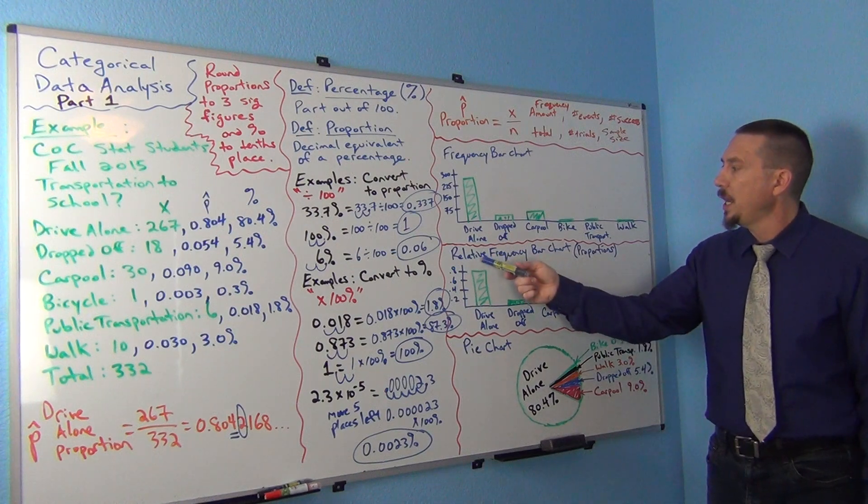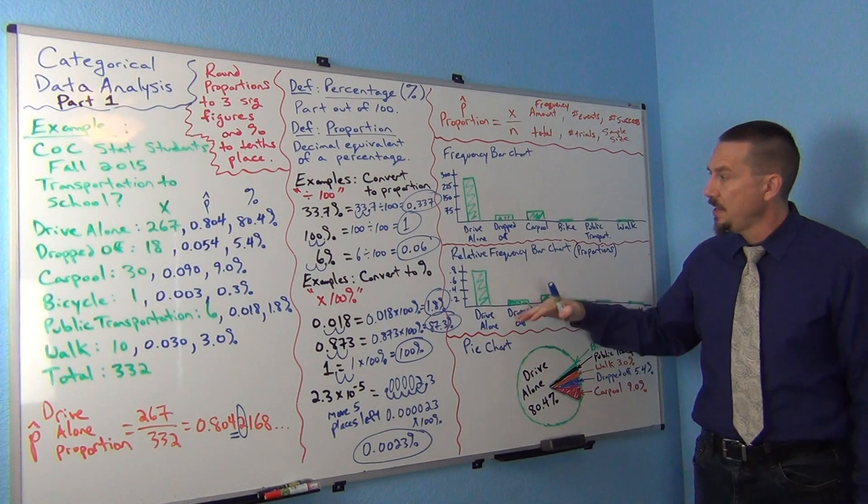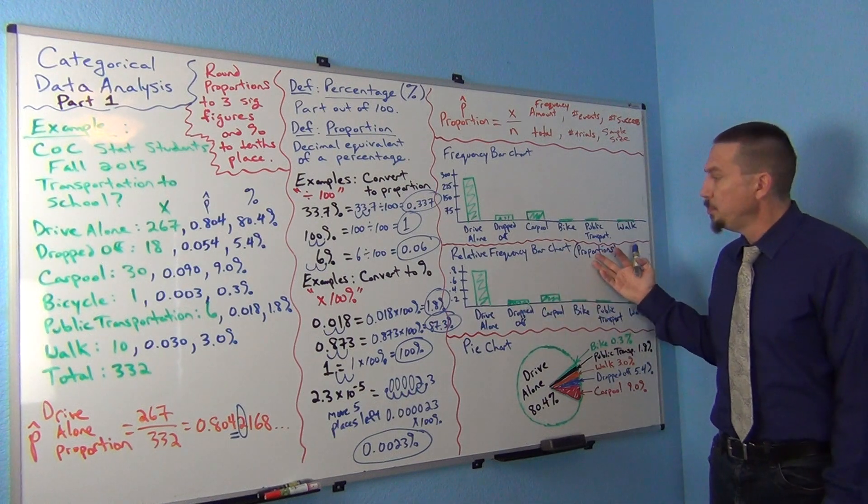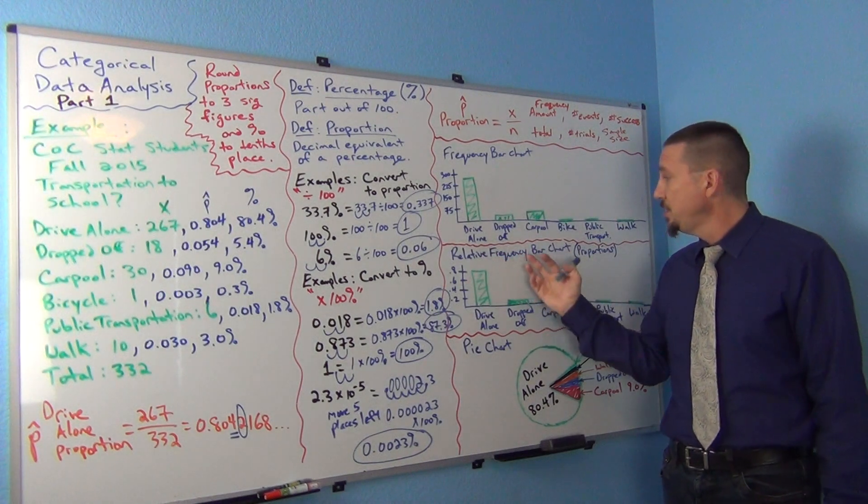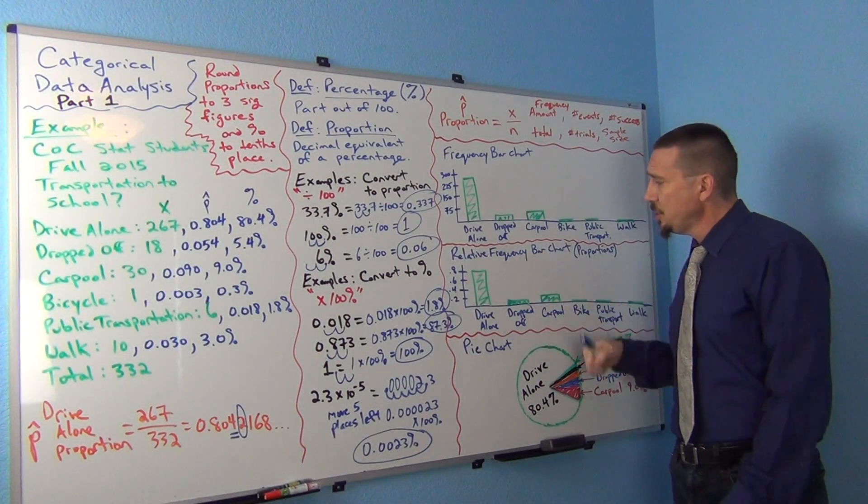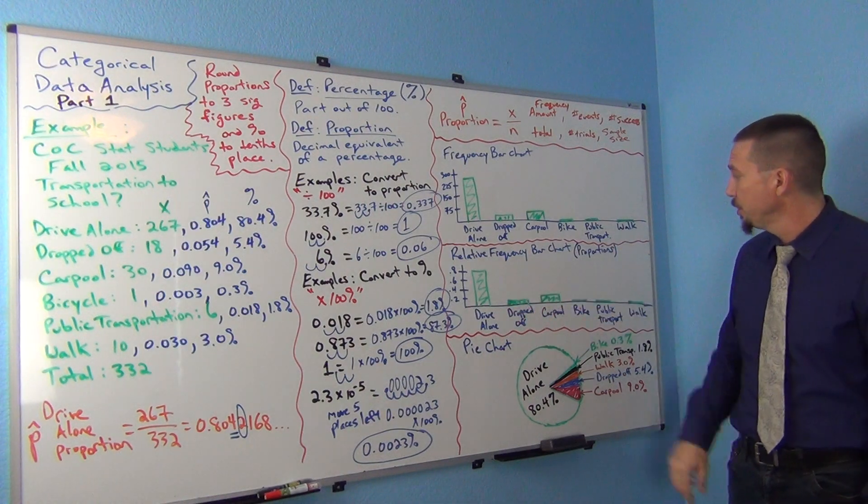This is called a relative frequency bar chart. A relative frequency means all of these have been converted to proportions. By the way, you also sometimes see a percentage relative frequency bar chart where these would be percentages converted back to percentage. But most of the time it's left as a proportion.